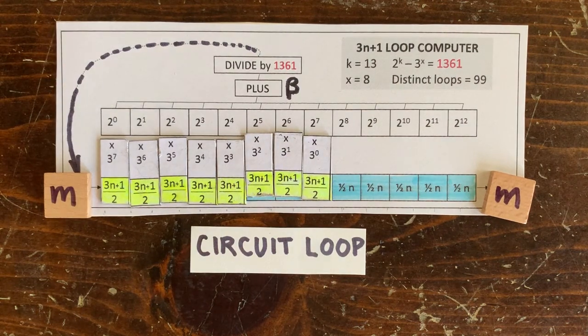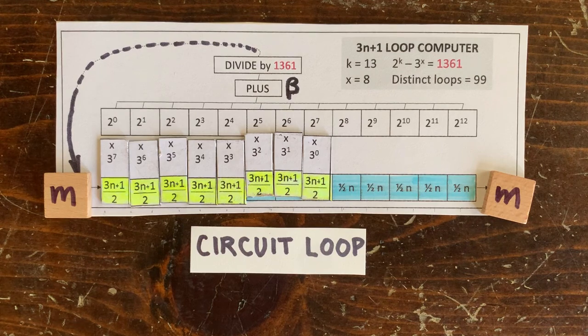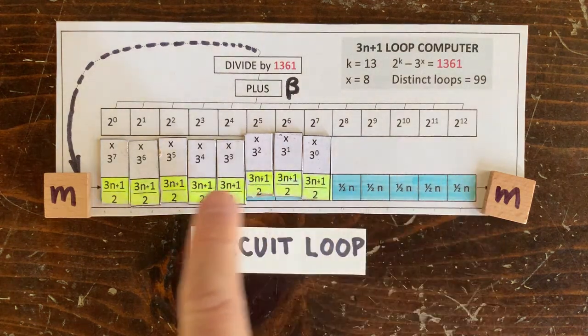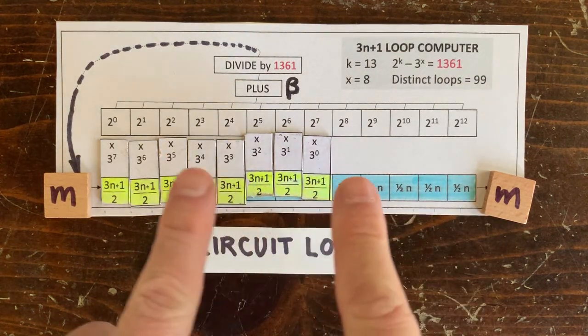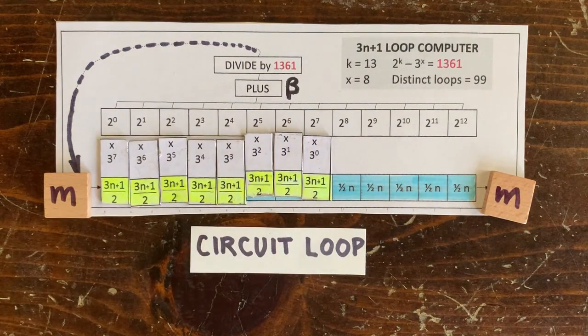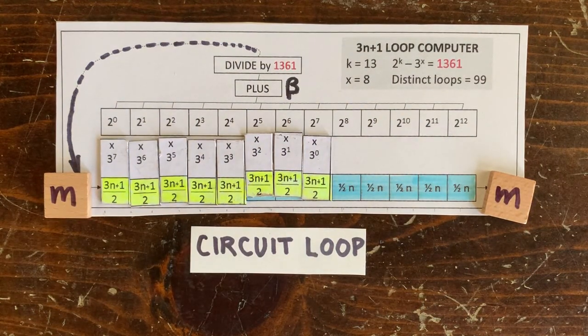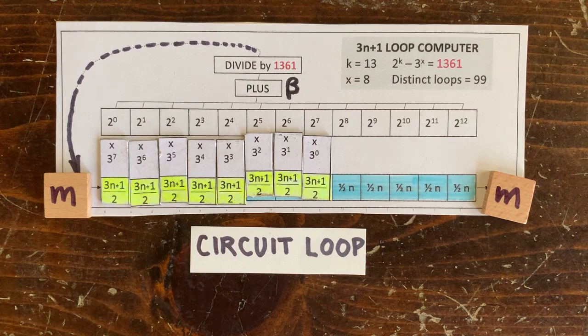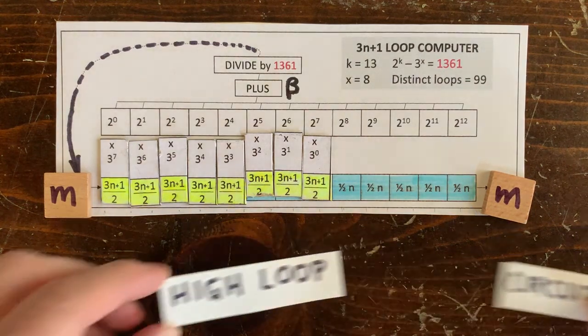Well, this is getting to be a pain to check all these. Imagine if we had k equals 50 or k equals 1000. It's too much to check. What if we could go directly to the most promising loop? The loop with the largest members. Let's call it the high loop.